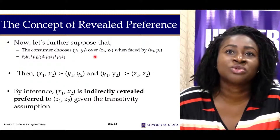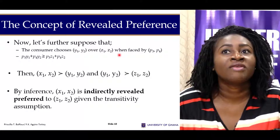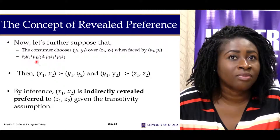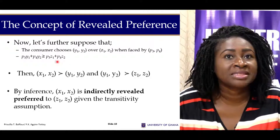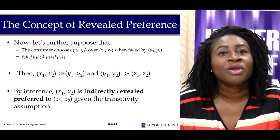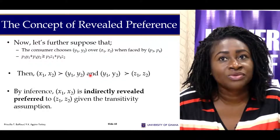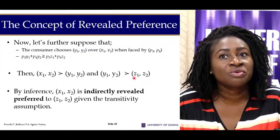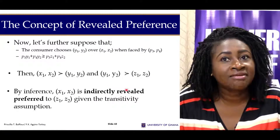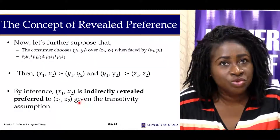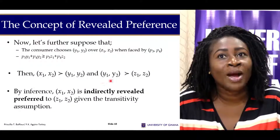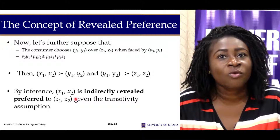Further suppose the consumer chooses (Y1, Y2) over (Z1, Z2) when faced with prices P3 and P4, meaning P3·Y1 + P4·Y2 ≥ P3·Z1 + P4·Z2. We established earlier that (X1, X2) is preferred to (Y1, Y2), and here (Y1, Y2) is preferred to (Z1, Z2). So by transitivity, (X1, X2) is indirectly revealed preferred to (Z1, Z2) — if you prefer X over Y and Y over Z, then you prefer X over Z.